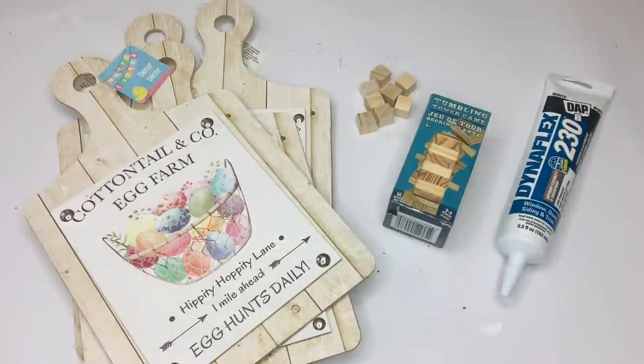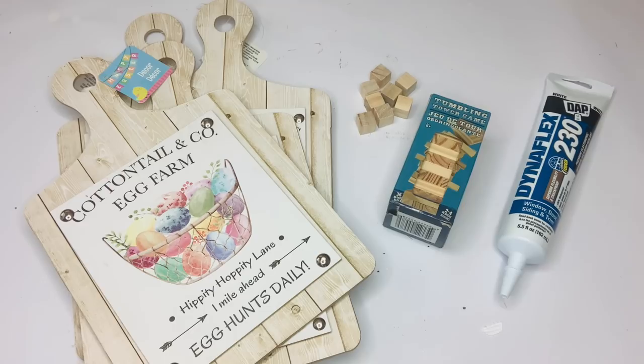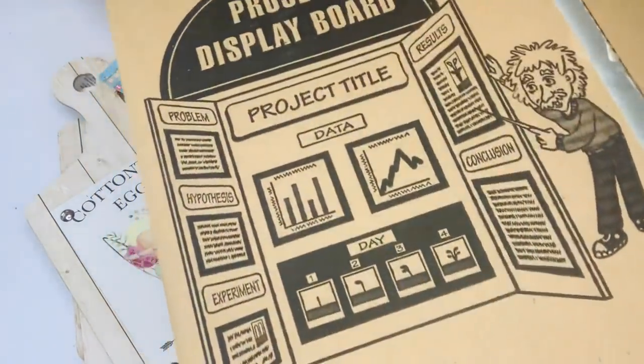For this Dollar Tree DIY, I'm going to be using four cutting boards, some tumbling tower blocks, some of the little square blocks, and some tube mastic. And then I'm also going to be using a display project board.